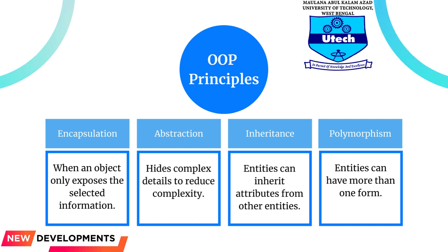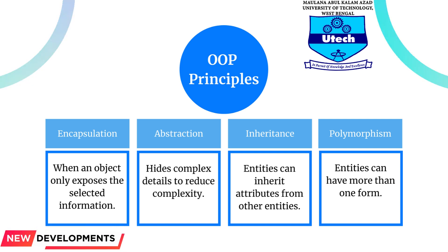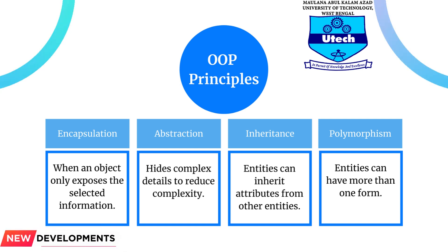Other objects are only able to call a list of public functions or methods. This characteristic of data hiding provides greater program security and avoids unintended data corruption.